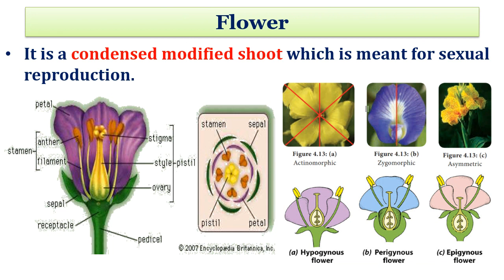The most important plant organ to be studied next is the flower. It is a condensed modified shoot which is meant for sexual reproduction. The characters of the flower to be studied are the stalk of the flower — that is the pedicel — receptacle, sepals and petals. Sepals in a group are called the calyx, petals in a group are called the corolla, then androecium and gynoecium. The androecium also shows different characters such as lobe types, filament and their fixation. The gynoecium also has many different characters.